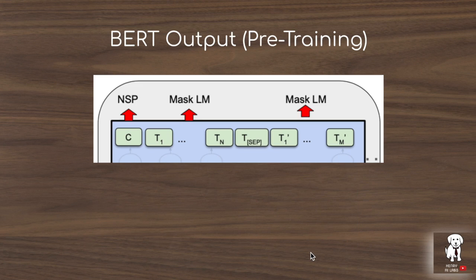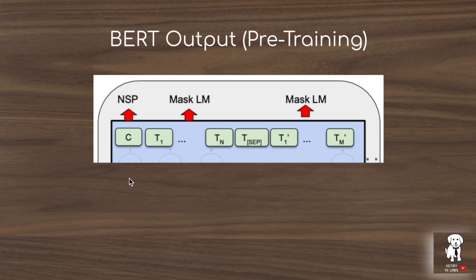The BERT transformer preserves the length of the input dimension, and the final output vectors are passed into separate tasks. The input to BERT has a special CLS token, then sentence A, then a special separator token, then sentence B. The representation at the CLS token index is sliced off and passed into the classifier for the next sentence prediction task — determining whether sentence B follows sentence A.